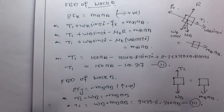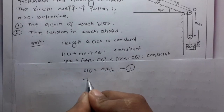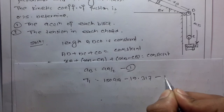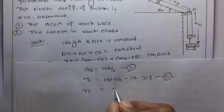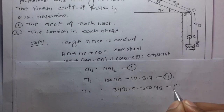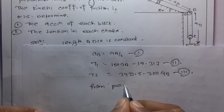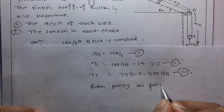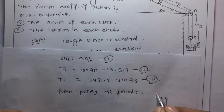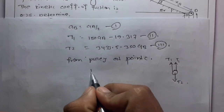So T2 equals WB minus mB times aB, which gives T2 equals 3433.5 minus 350 aB. This is equation number three. Our three equations are: (1) aB equals aA over 2, (2) T1 equals 150 aA minus 19.317, (3) T2 equals 3433.5 minus 350 aB. From the pulley at point C, T2 equals 2T1.